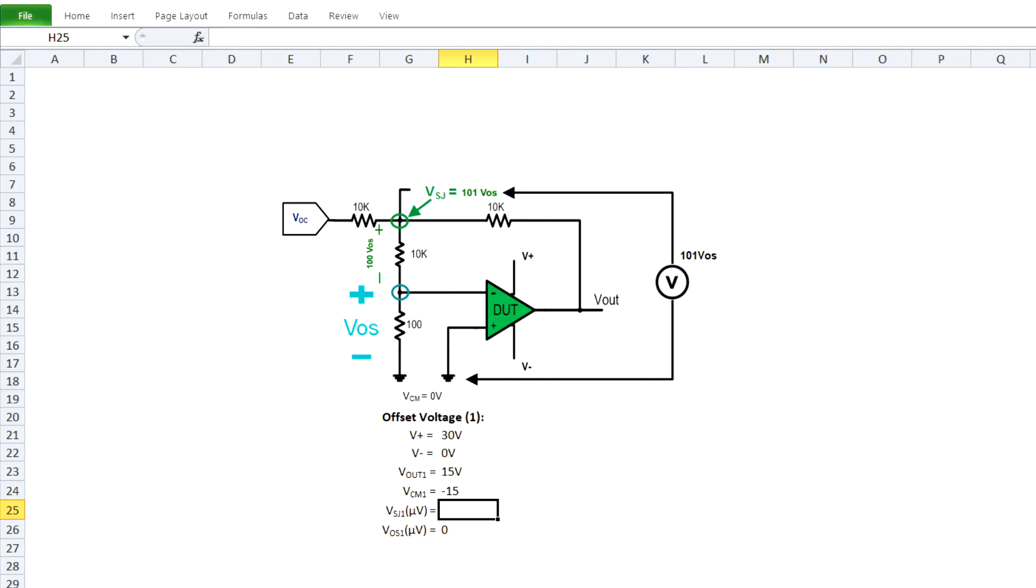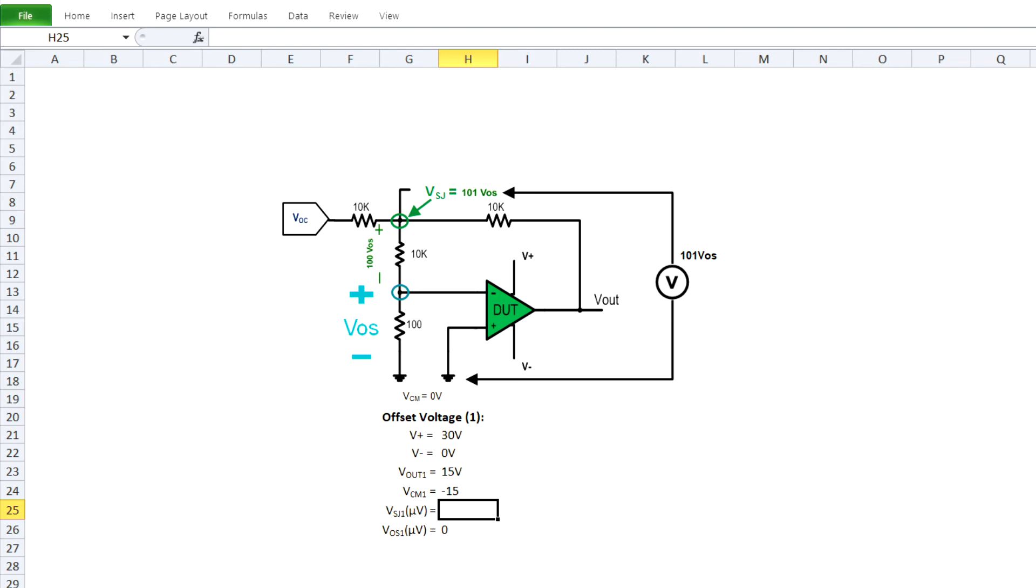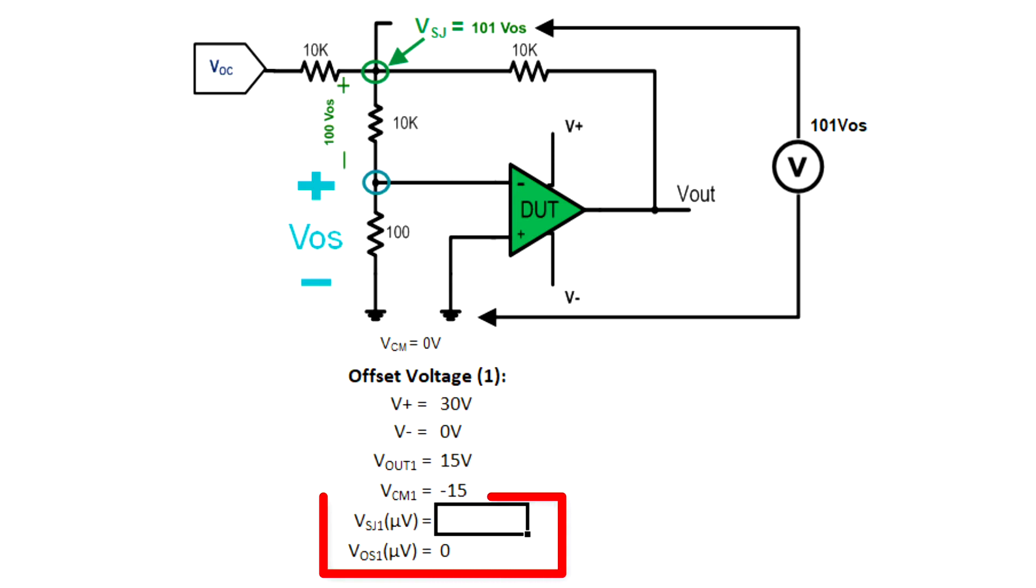Using a spreadsheet, we can calculate the approximate offset voltage based on the measured value on the digital multimeter. In this example, we see the voltage at the false summing junction node is under 300 microvolts. We will use 283 microvolts for this example.